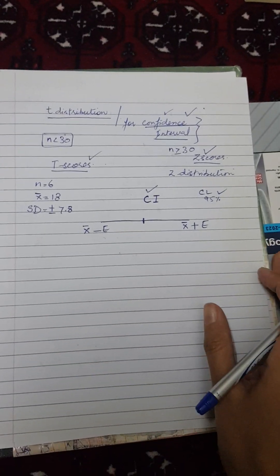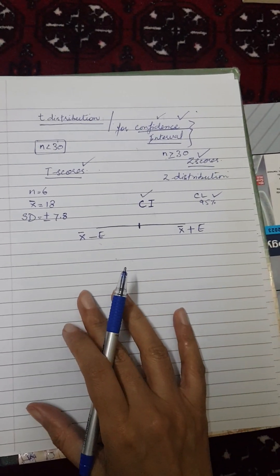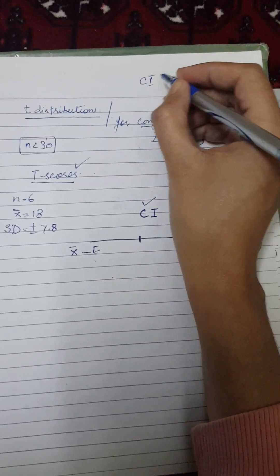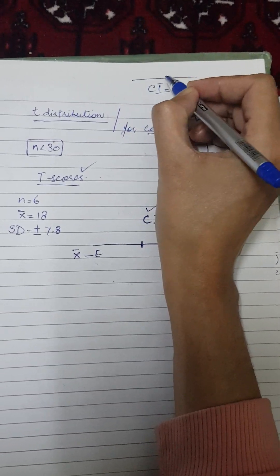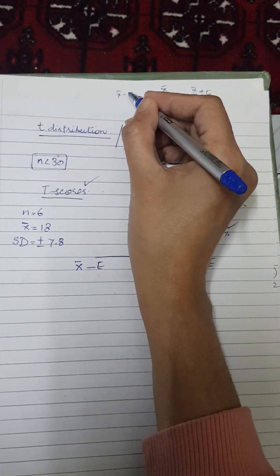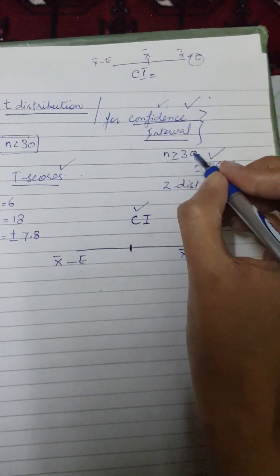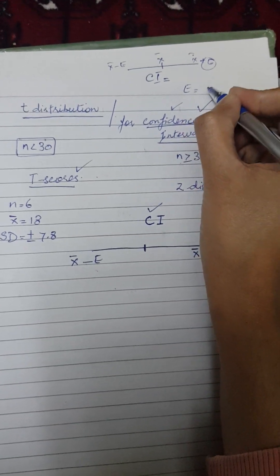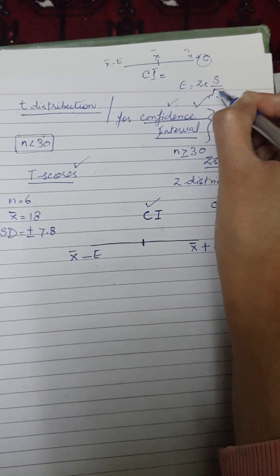If you remember the formula for the calculation of confidence interval while using the z-score, just to revise: the confidence interval is x-bar, with positive on the right and negative on the left. To calculate E, when we were using the z-scores and the z-distribution, the formula of E was: z-score multiplied by standard deviation divided by square root of N.